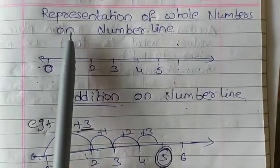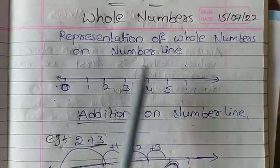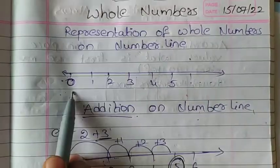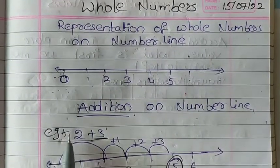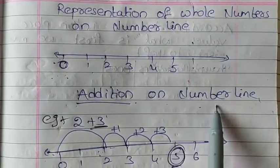Now we learn representation of whole numbers and number line. This is the number line 0, 1, 2, 3, 4, 5 up to so on. Let's learn about addition on number line.